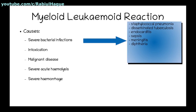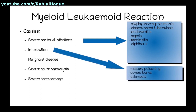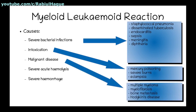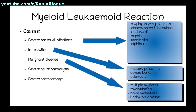Causes leading to intoxication that can cause myeloid leukemoid reaction include mercury poisoning, severe burns, and eclampsia. Regarding malignant diseases, they include multiple myeloma, myelofibrosis, bone metastasis, and Hodgkin's disease.